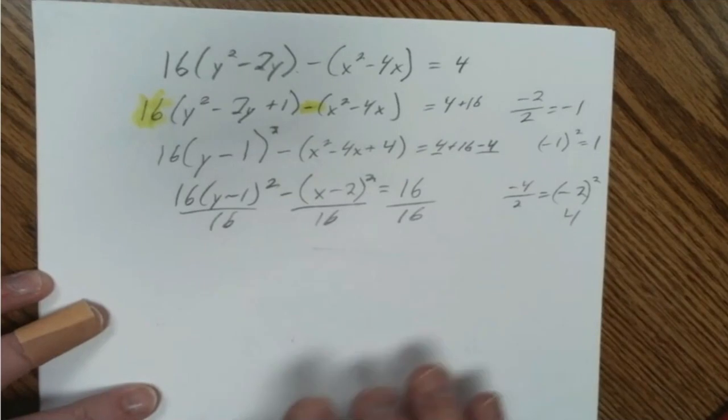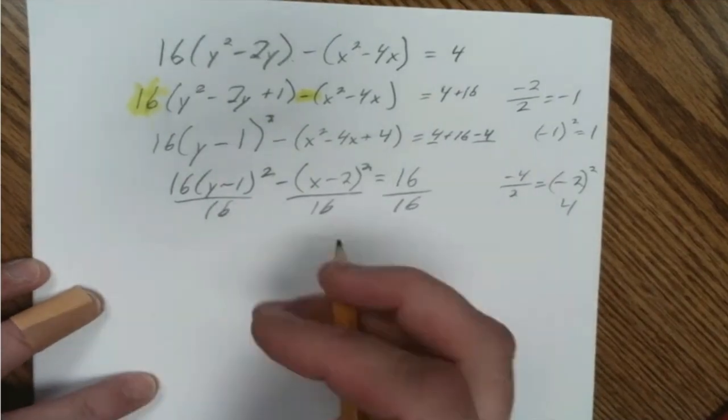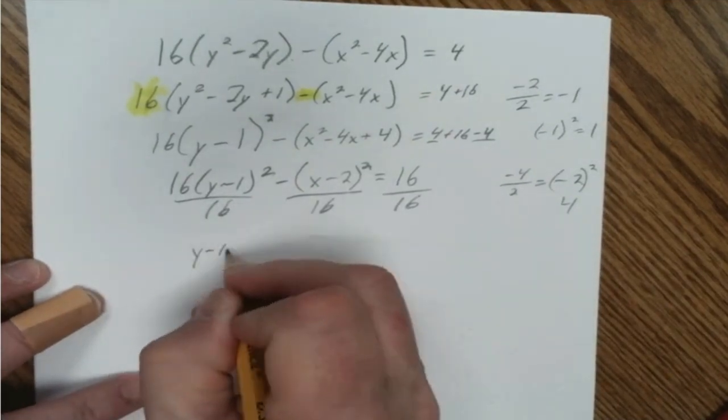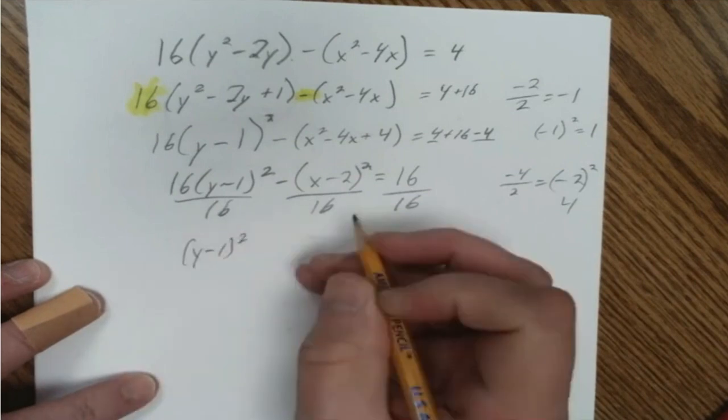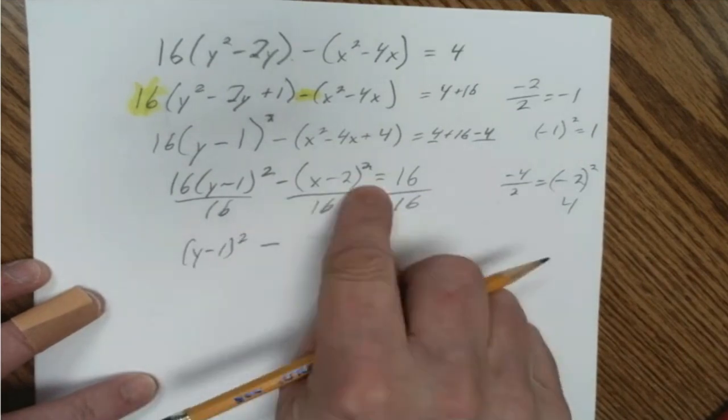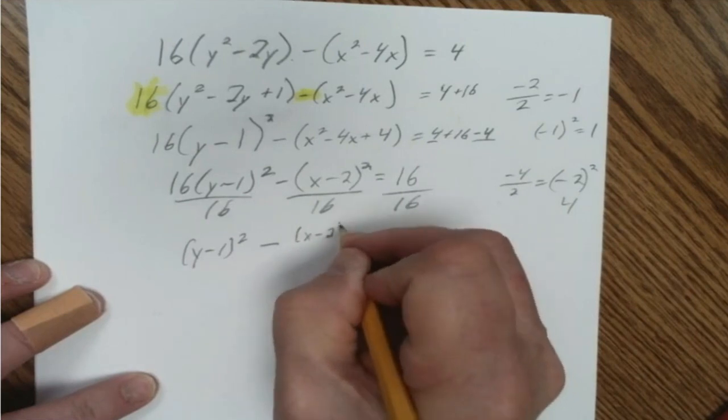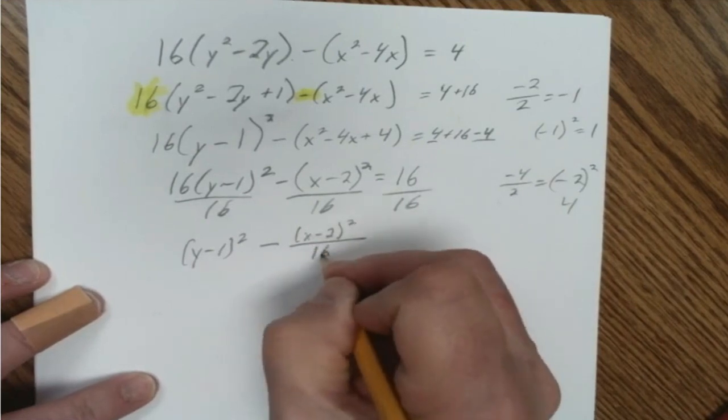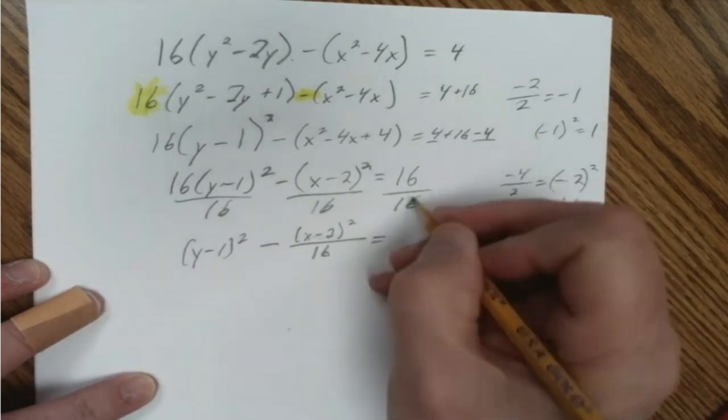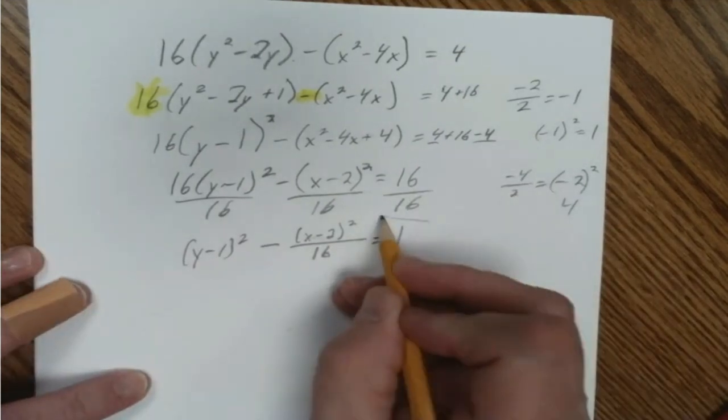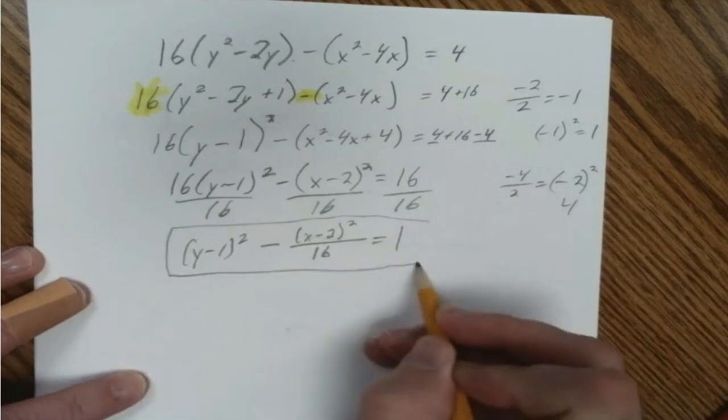So I'm not quite to the equation of a hyperbola. I gotta divide everything by 16 because I need this just to be the y and the x on top. So if I divide everything by 16, that means I have to divide this by 16 because I gotta divide everything on both sides by 16. So this just becomes y minus 1 squared minus x minus 2 squared over 16 equals 1, and the equation of a hyperbola should equal 1.